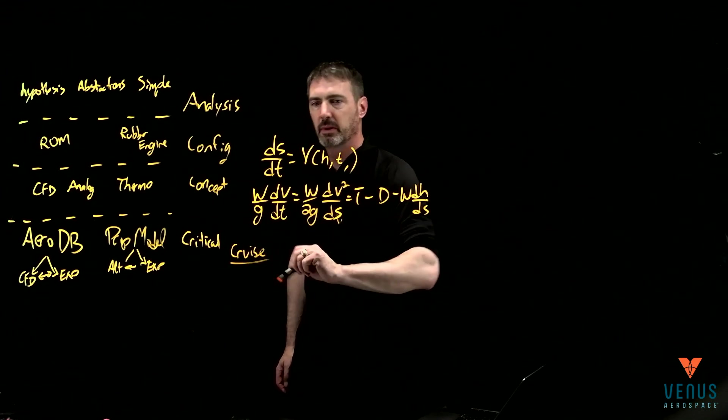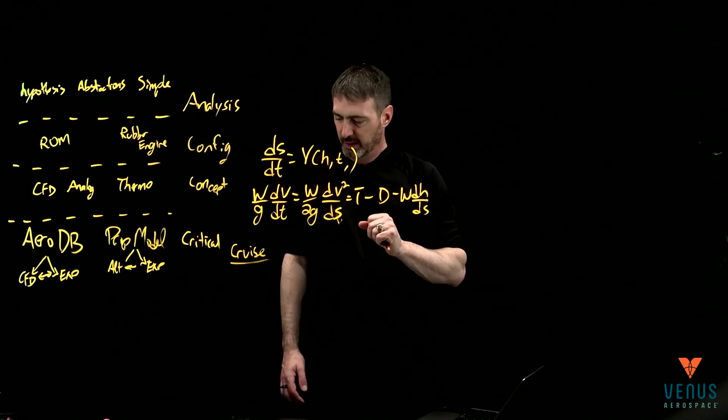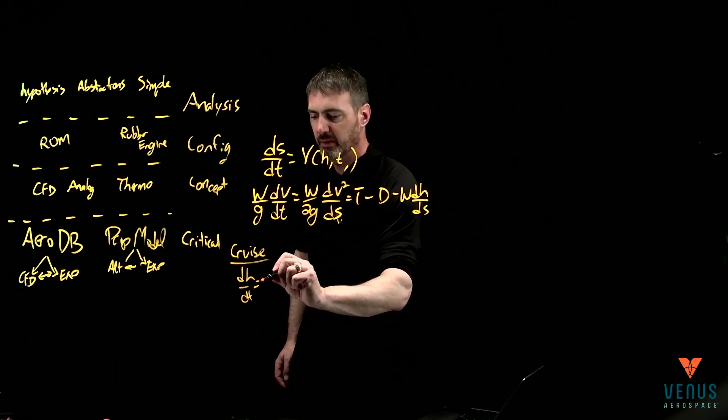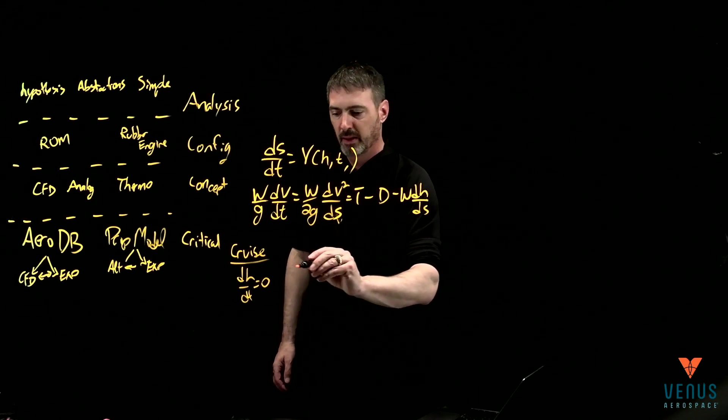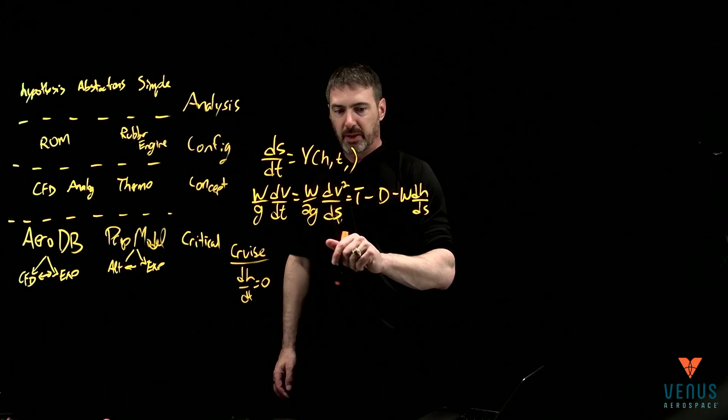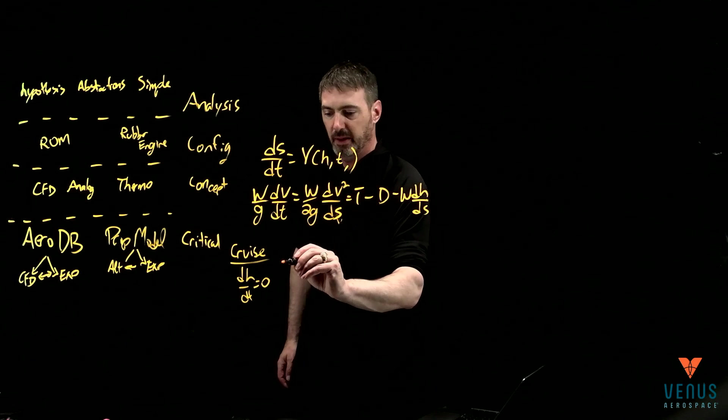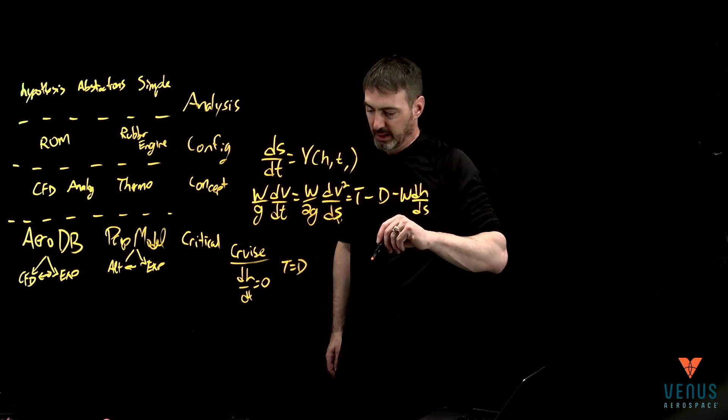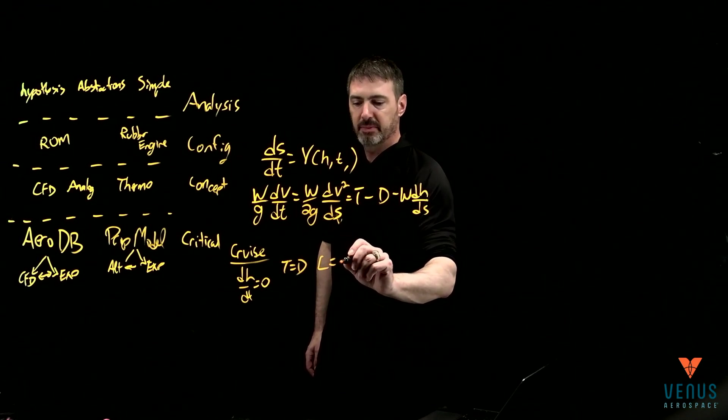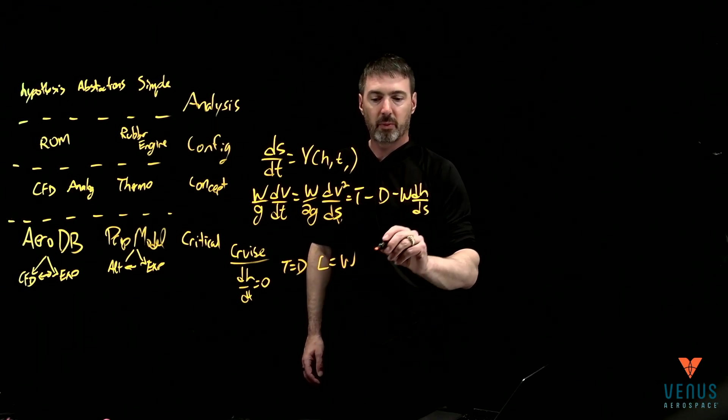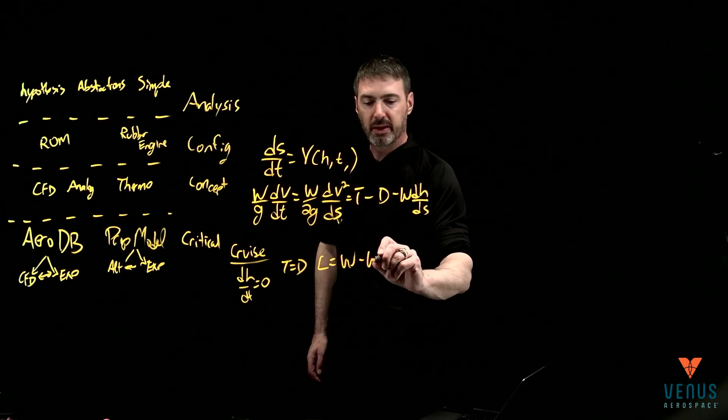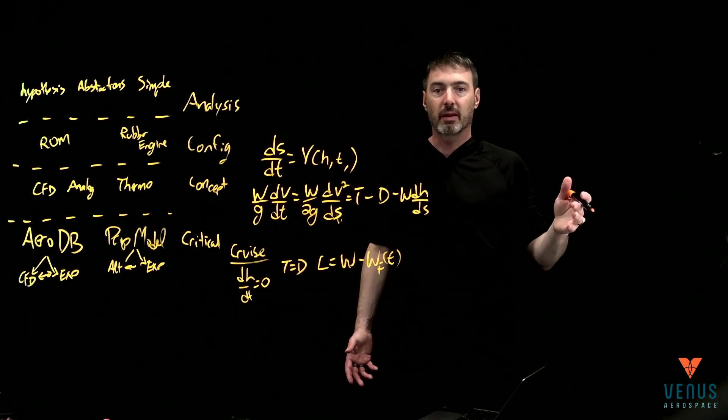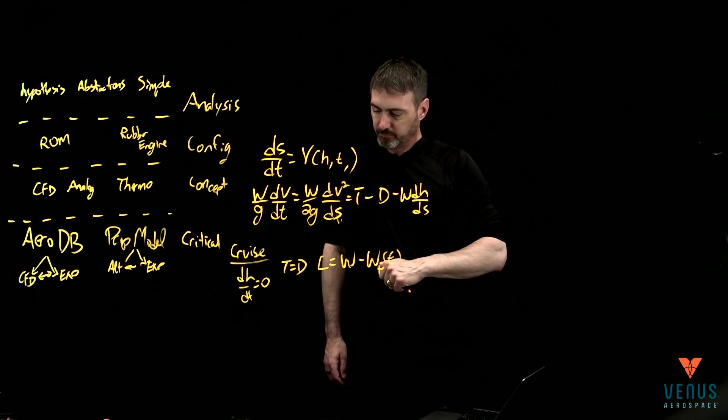If we want to just take a look at cruise, the cruise condition, a couple of things are easy. This would be dH/dt is equal to zero, so I'm not changing altitude. You end up having this top equation just becomes my thrust is equal to drag. That's not very exciting, but it's the condition for cruise. And then you have lift has to be equal to the current weight of the system, which would be the weight of the aircraft minus how much fuel has been burnt. The aircraft is getting lighter. So this is the only form that's actually changing.